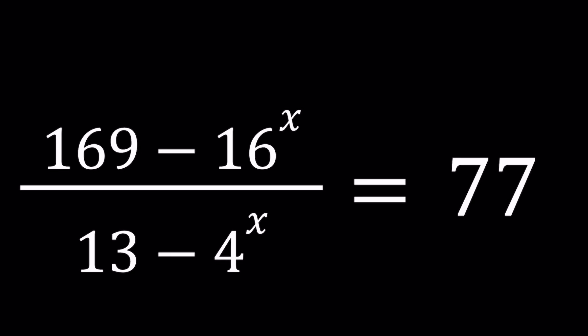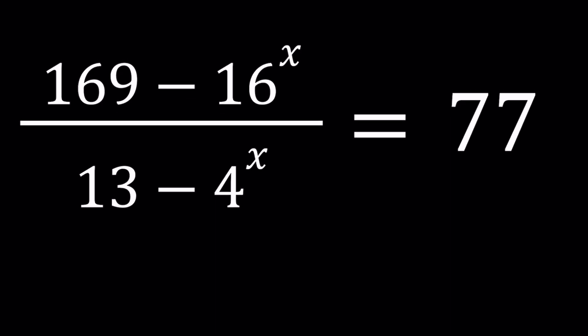Hello everyone. In this video, we're going to be solving an exponential rational equation, or a rational exponential equation. We have (169 minus 16 to the power x) divided by (13 minus 4 to the power x), and that is equal to 77. We're going to be looking for x values. To be able to solve this problem, I'll be presenting two methods, and let's start with the first one.